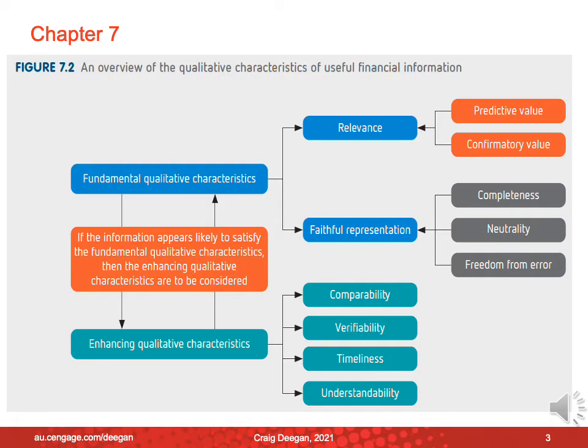Chapter 7 looks at the qualitative characteristics of useful financial information in some depth. We also talk about how many of these qualitative characteristics — the fundamental ones of relevance and faithful representation, and the enhancing ones of comparability, verifiability, timeliness and understandability — have relevance not just to financial information, but also to social information, environmental information, and sustainability-related information. That is, these qualitative characteristics of useful information can really be applied to all forms of information.